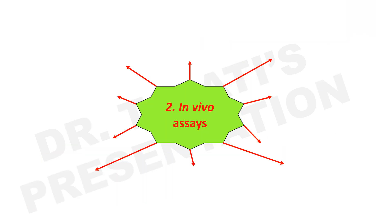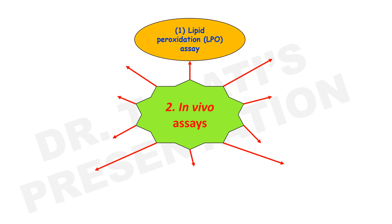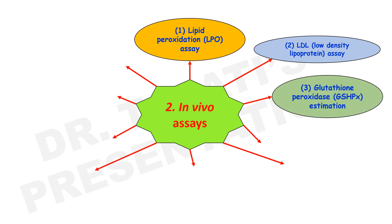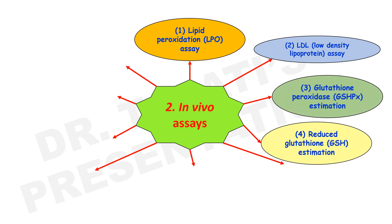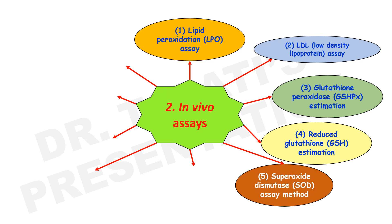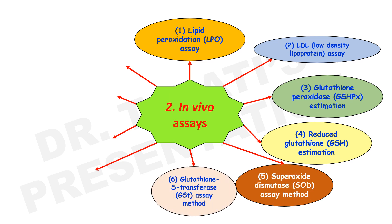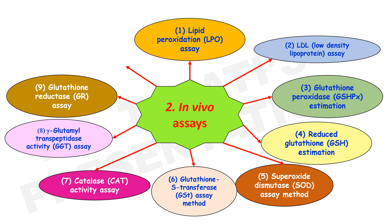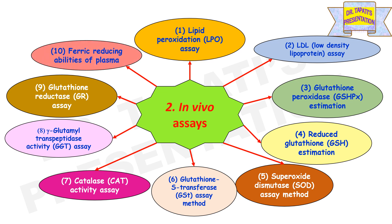The names of in vivo assays for determination of antioxidant properties include: lipid peroxidation assay, LDL assay, glutathione peroxidase estimation, reduced glutathione estimation, superoxide dismutase assay, glutathione-S-transferase assay, catalase activity assay, gamma-glutamyl transpeptidase activity assay, glutathione reductase assay, and ferric reducing ability of plasma.